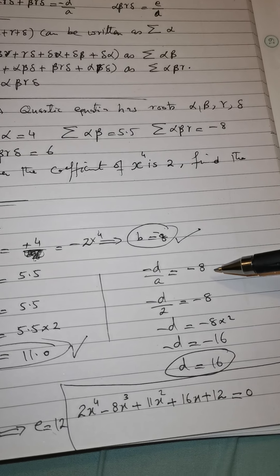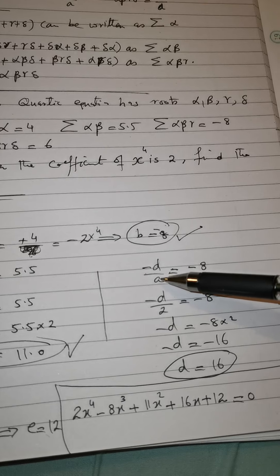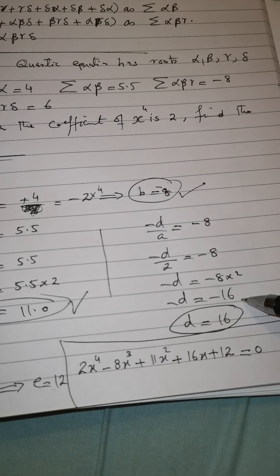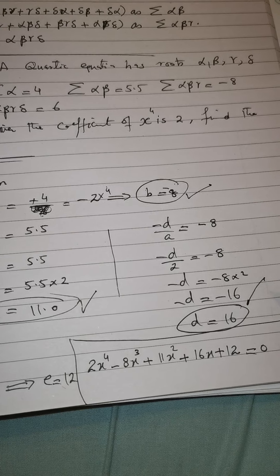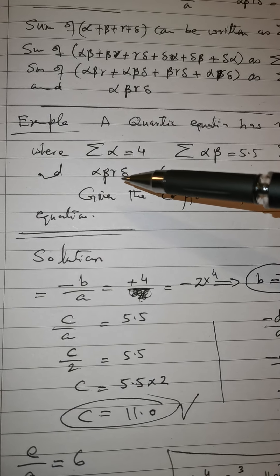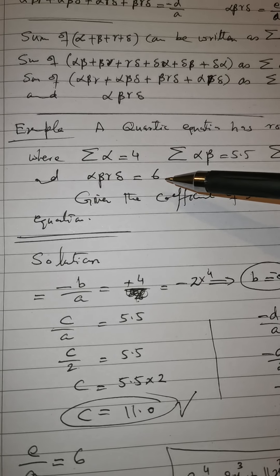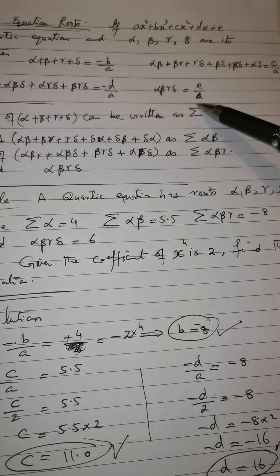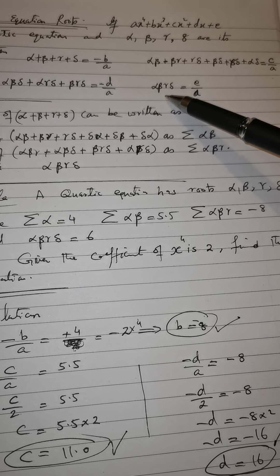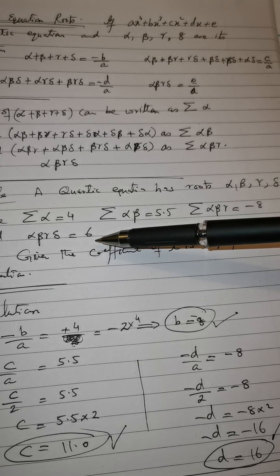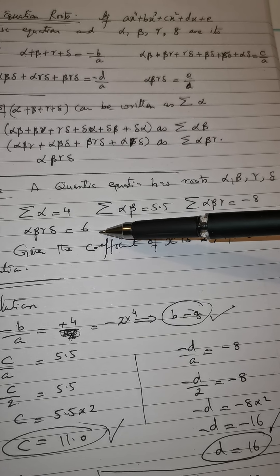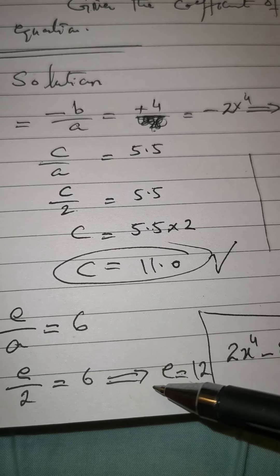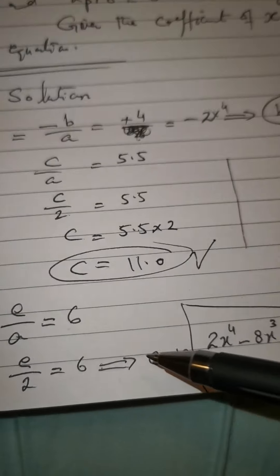We know the value of a (the coefficient of x⁴), and we have found d = 16. Now, the product αβγδ is given as 6, and αβγδ = e/a. So e/a = 6; putting a = 2, we get e = 12.